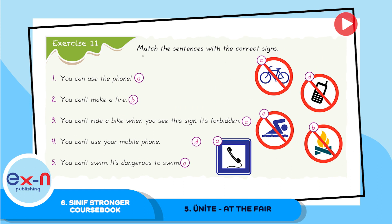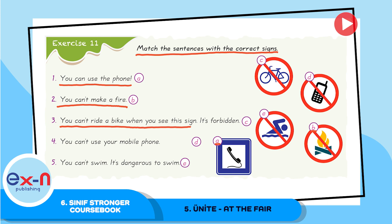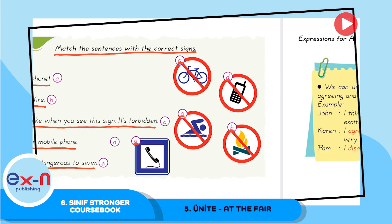Exercise 11: Match the sentences with the correct signs. Sentence 1 — you can use the phone — can be matched with photo A. You can't smoke. You can't make a fire — can be matched with photo B. You can't ride a bike when you see this sign — it's forbidden — can be matched with C. You can't use your mobile phone — can be matched with D. You can't swim — it's dangerous to swim — can be matched with E.